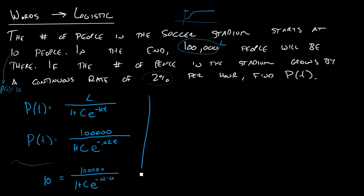And so to solve this, it's actually not too bad because this e to the negative .02 times zero, that's going to turn into a one. So I'm left with ten equals 100,000 divided by one plus C. And so to solve this, I'll multiply the one plus C over there, I'll multiply the ten over there.